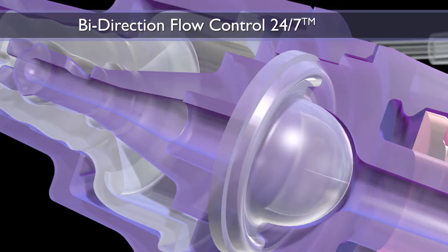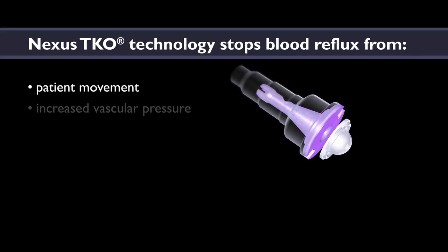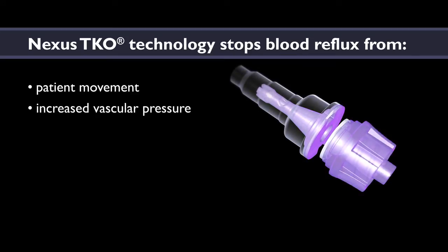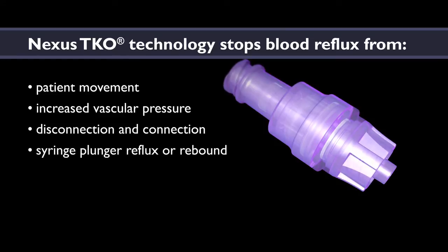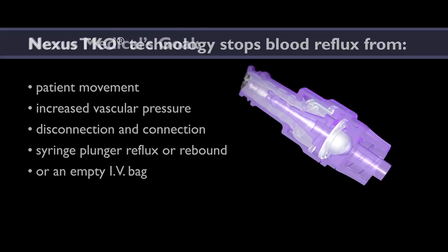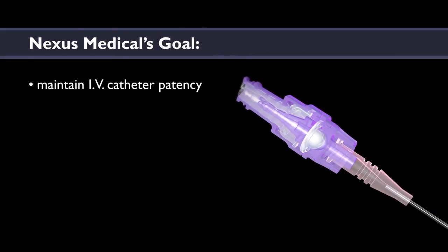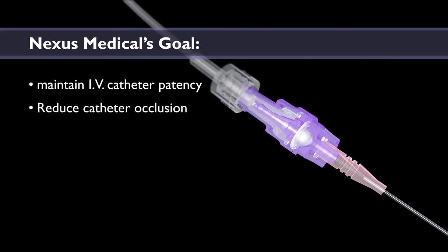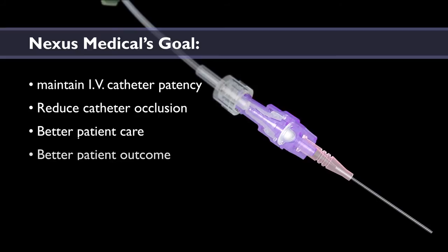Nexus TKO technology stops blood reflux from patient movement, increased vascular pressure, disconnection and connection, syringe plunger reflux or rebound, or an empty IV bag. The goal of Nexus Medical is to maintain IV catheter patency and reduce catheter occlusion, leading to better patient care and outcomes.